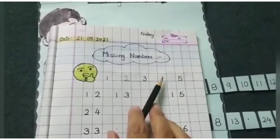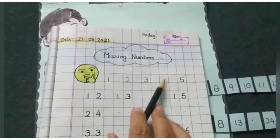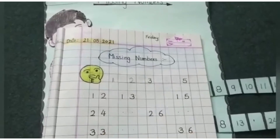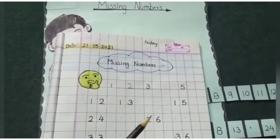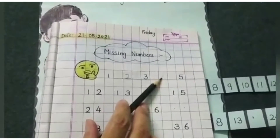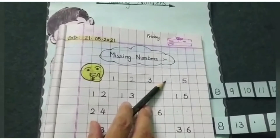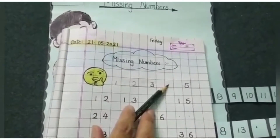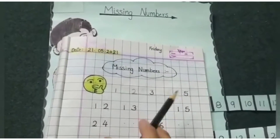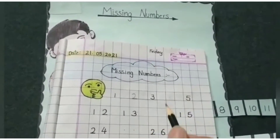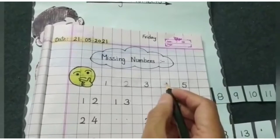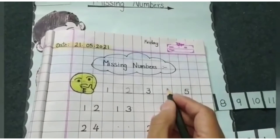Again, 1 number is missing. Which number is missing, Ojas? 4. Yes, 4 is the missing number. We can fill the box with number 4.